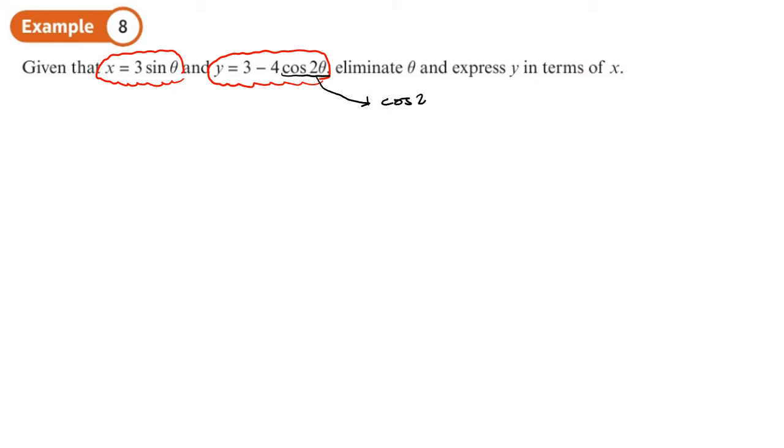Right, so cos 2 theta we can write using a double angle formula. Now we've got three choices. We've got cos squared minus sin squared, or 2 cos squared minus 1, or 1 minus 2 sine squared theta. So which one are we going to choose?